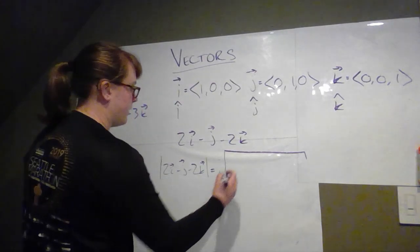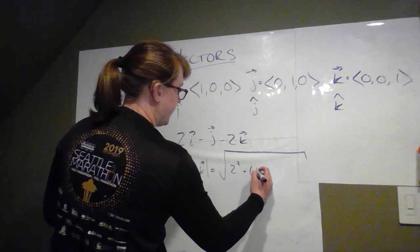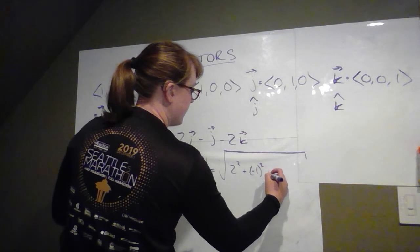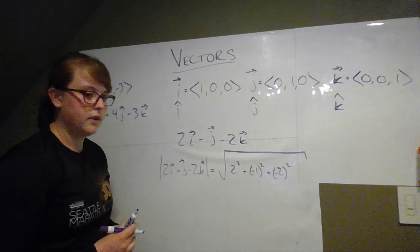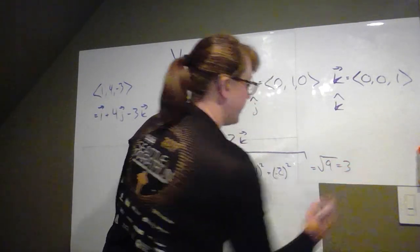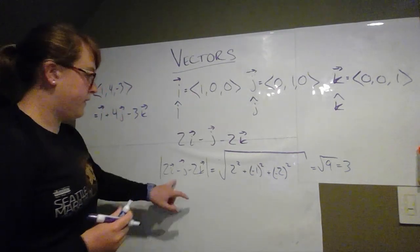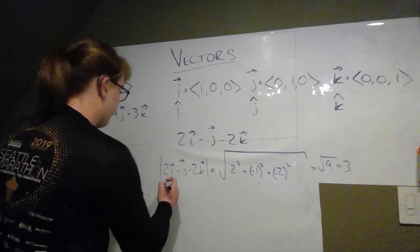So first we need to find the length. So the length of 2i minus j minus 2k. So that's just going to be the square root of 2 squared plus negative 1 squared plus negative 2 squared, which is the square root of 9 which is 3.